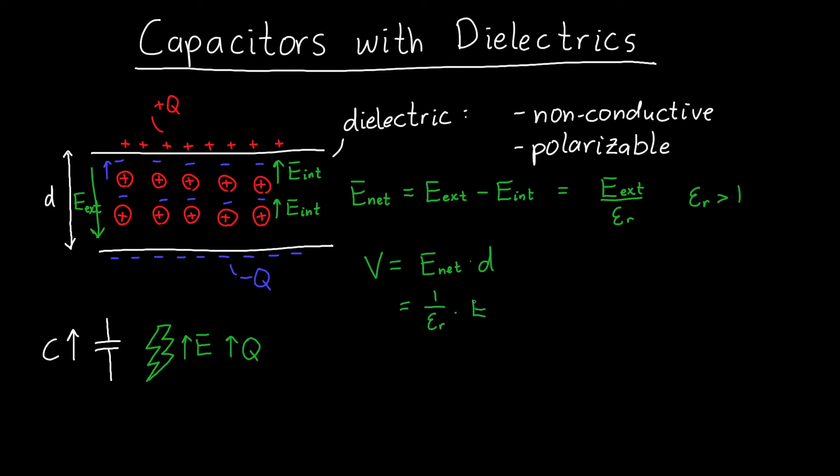So this is what the voltage would have been, I'll call this V old. And so our new voltage is one over epsilon r times V old.